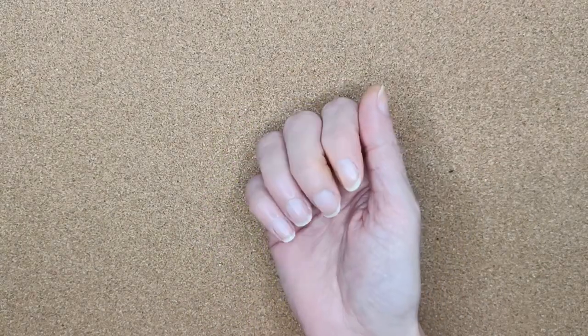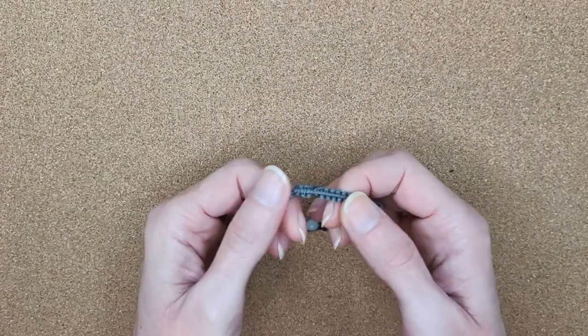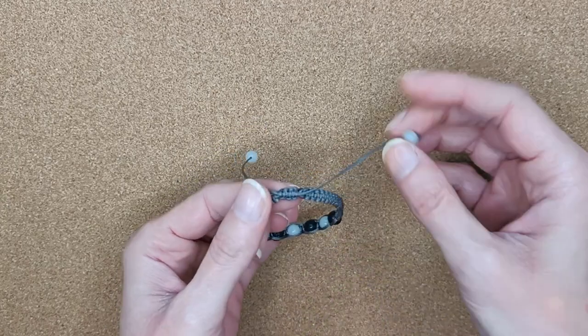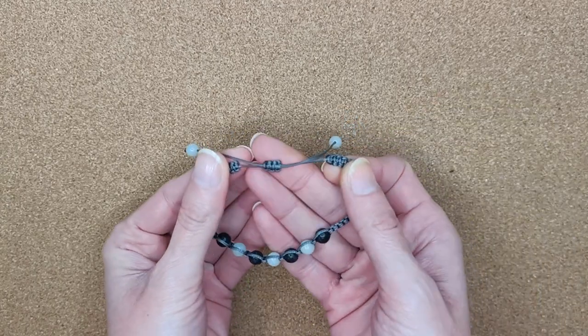Hello beautiful souls! In this tutorial, you will learn how to make an easy, adjustable sliding square knot macrame cord bracelet closure.